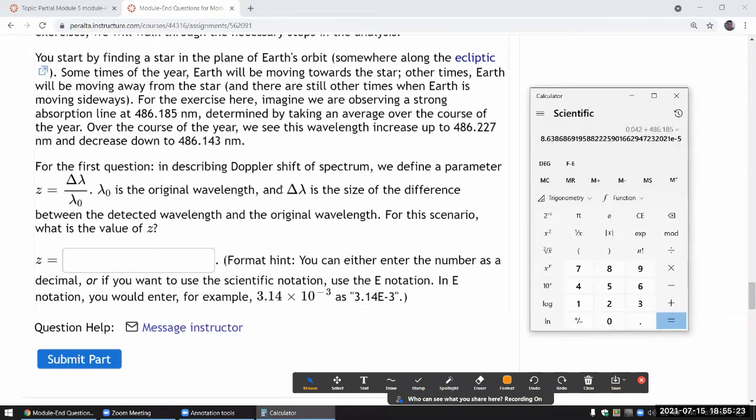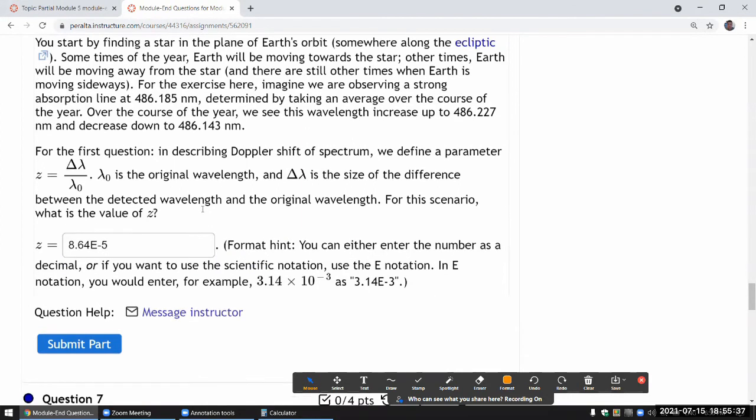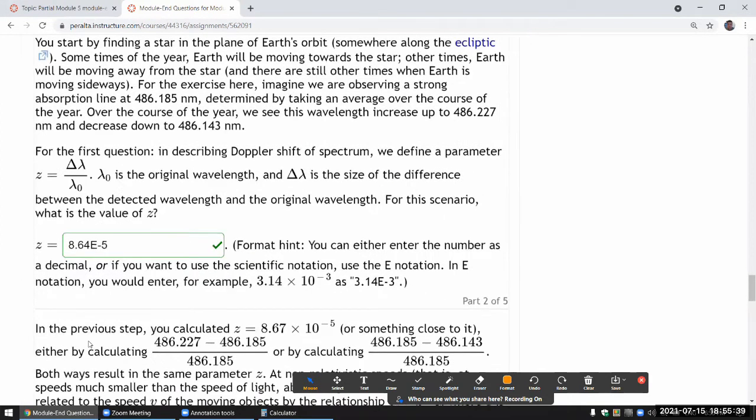Okay, oh wow, that is a quite small number. So 8.64 times 10 to the power of minus 5. 8.64 times 10 to the power of minus 5. Okay, that I think is right. Yep.